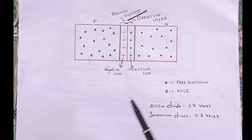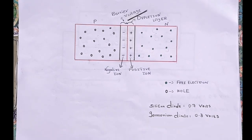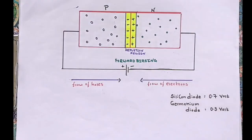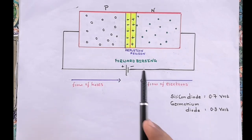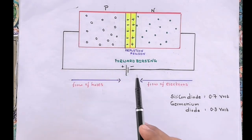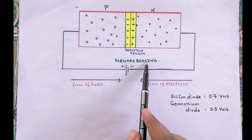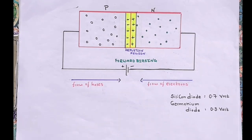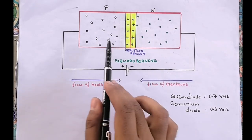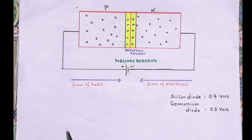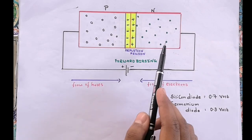Now let's see the biasing of a p-n junction diode. The process of applying external voltage to a p-n junction diode is called biasing, applied in two methods: forward biasing and reverse biasing. In forward biasing, the positive terminal of the battery is connected to the p-side and the negative terminal to the n-side. The positive terminal repels holes in the p-region and the negative terminal repels electrons in the n-region, so these charge carriers move towards the junction.